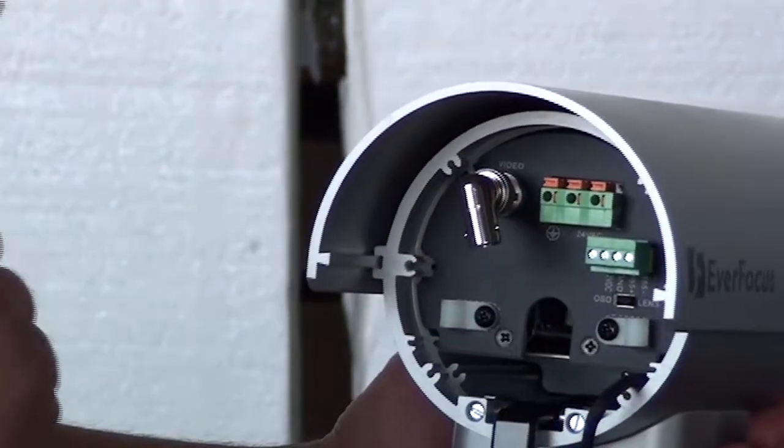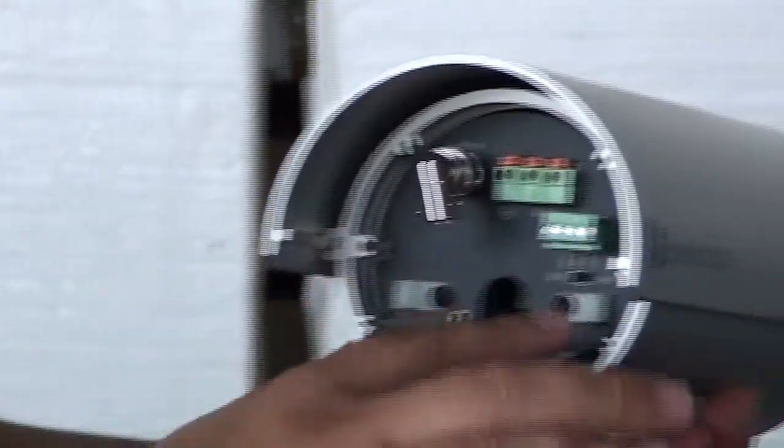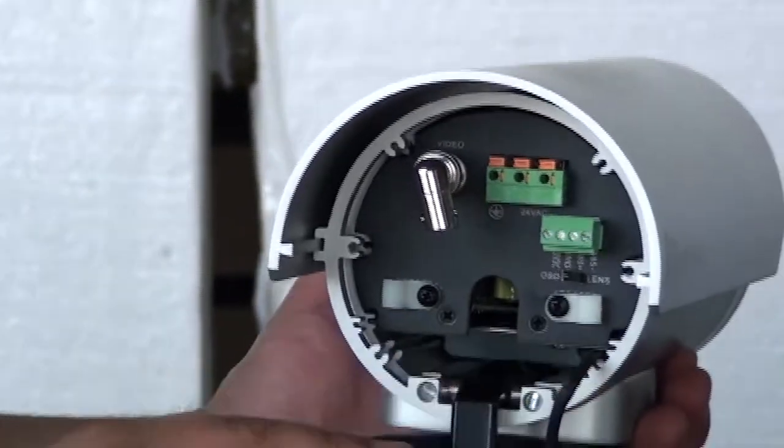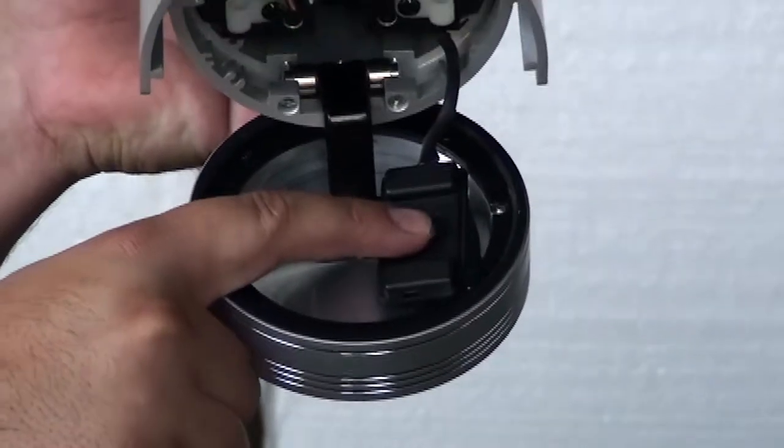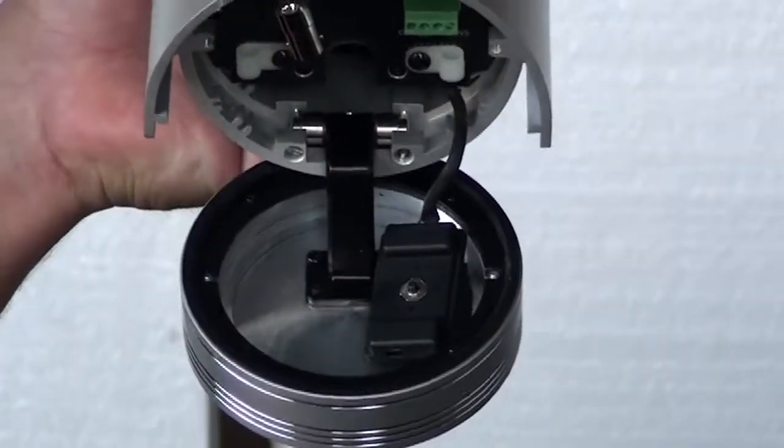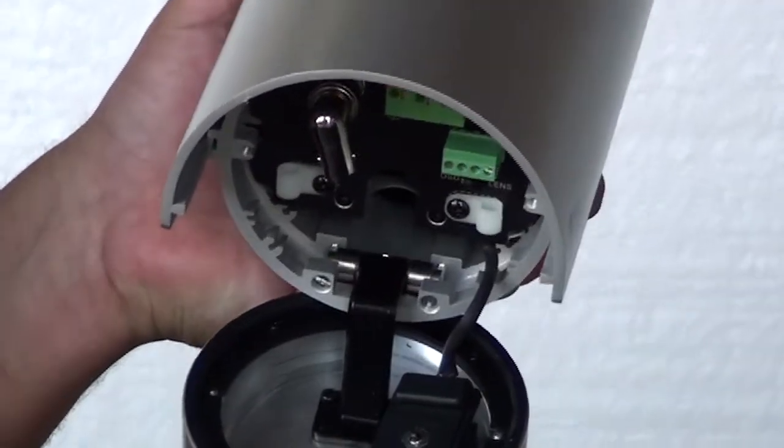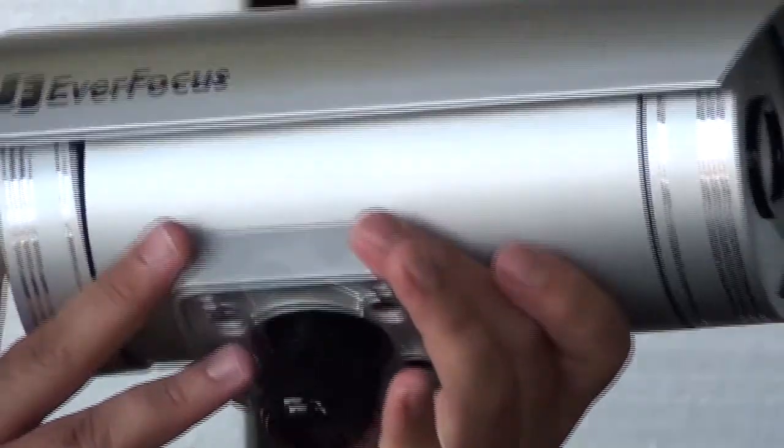To adjust the lens on the camera, push the switch here to the lens setting. You have a controller that's built into it where you can make your adjustment on the lens. It's really simple and pretty easy to do. That's basically it.